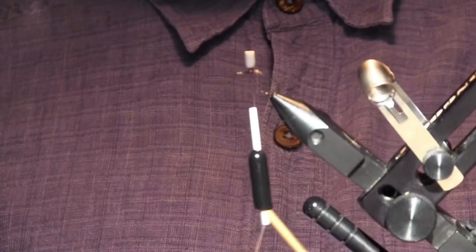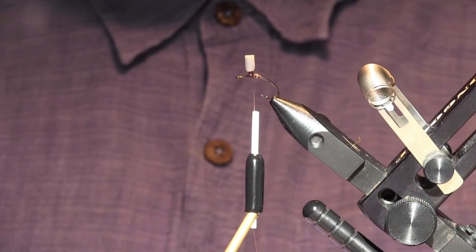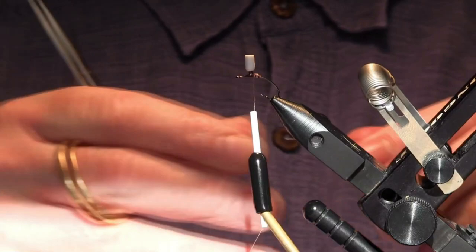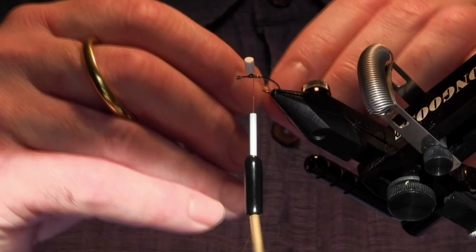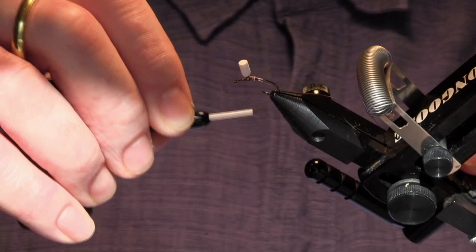The next step is to take some brassy ultra wire in copper. I'm gonna clip myself out a few inches to have something to work with. When I attach this, I want it to be on the underside of the hook shank. What that does is help the weight distribution of this fly maintain its correct orientation in the water and helps it hit the water in the right orientation.